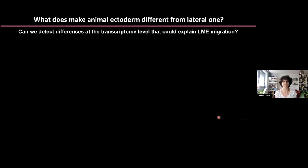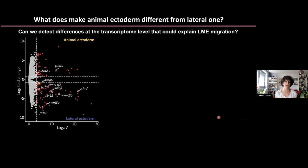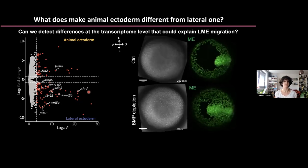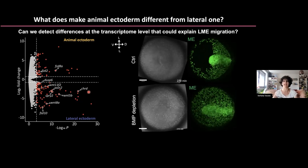Finally, we wanted to know what creates the difference between animal and lateral ectoderm. We looked at the transcriptome of animal versus lateral ectoderm and found that the lateral ectoderm expresses several components of different signaling pathways, including Wnt, PCP, and BMP. Notably, the lateral ectoderm expresses chordin, a BMP inhibitor. We know BMP is important for gastrulation because fully removing BMP prevents convergence. We then asked whether absence of BMP also alters the tumbling phase. Indeed, when we removed BMP from the embryo, cells fully invaded the animal pole — mostly reaching the future head region, which is not normally seen.